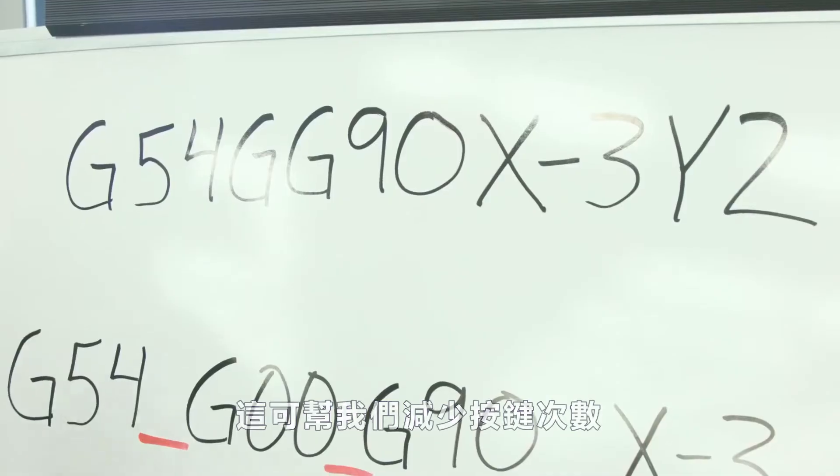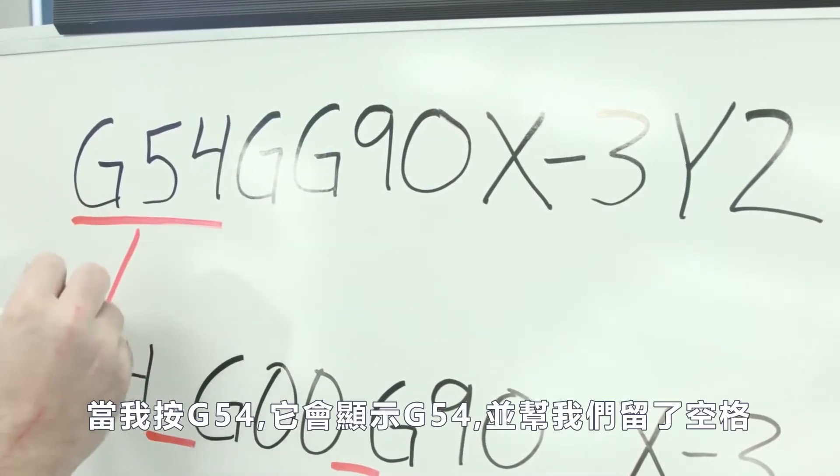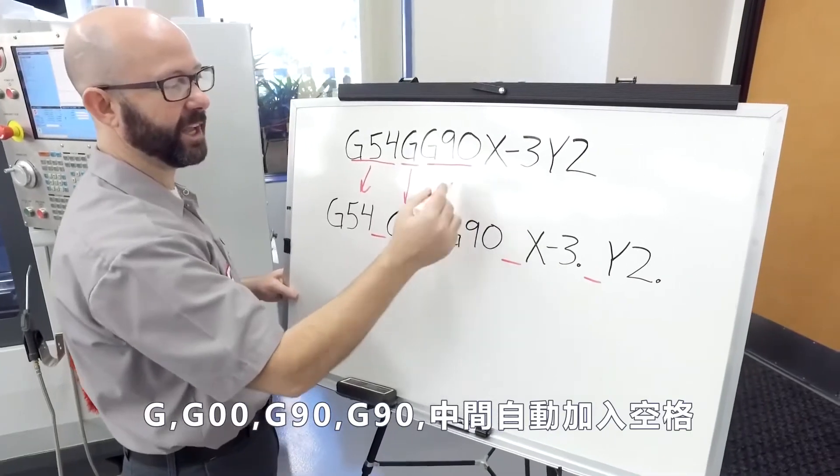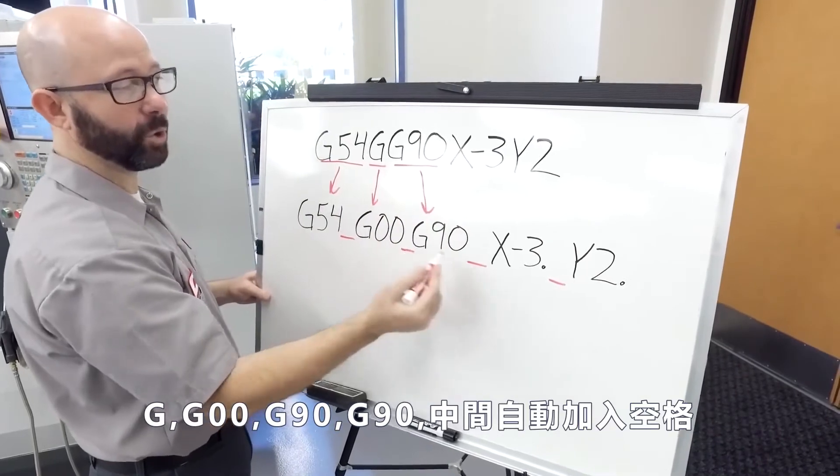That saves us keystrokes. When I entered G54, it put G54, it added the space for us. G0, G90—the control adds the spaces.